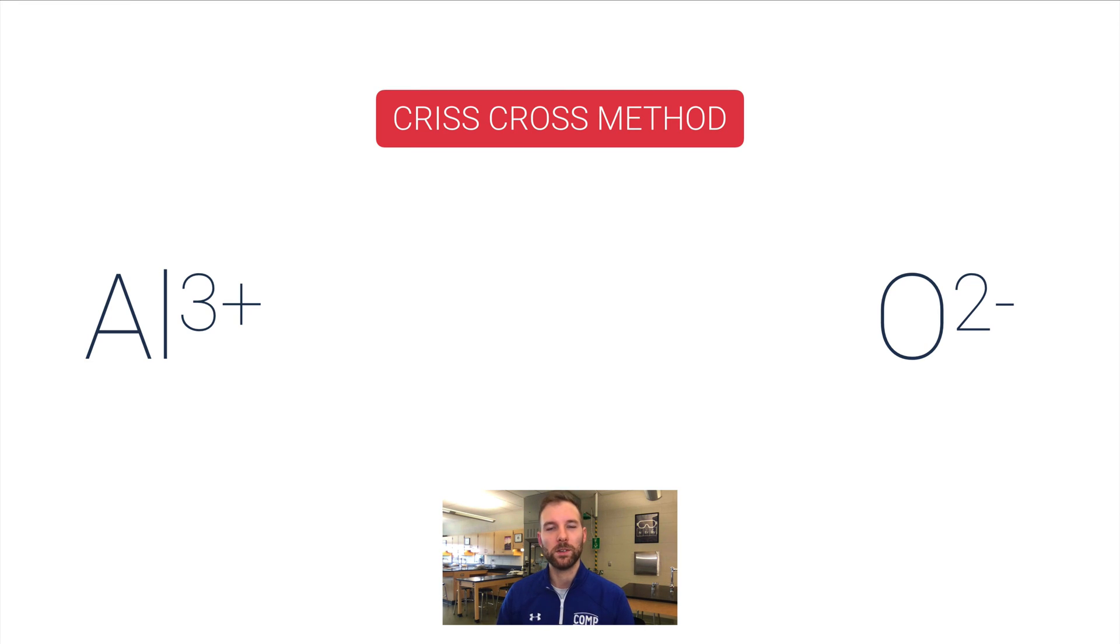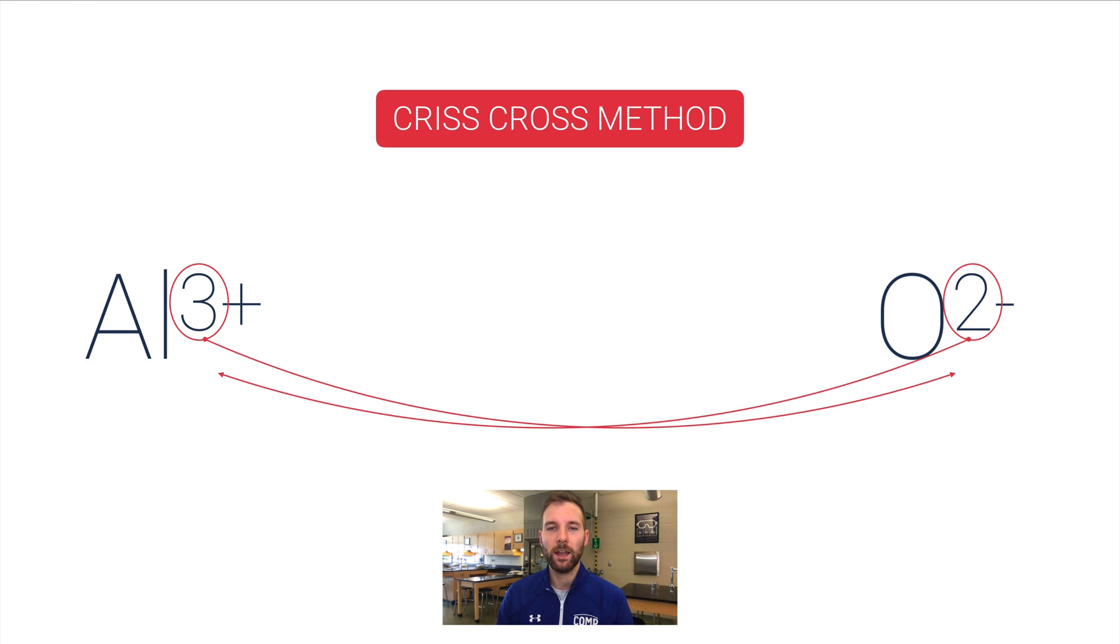Let me show you this crisscross method. There's a quick way to do this if you know the charges. You take the number of the charge, like for aluminum with the three, bring that three down as the subscript of the other element. Same thing here, bring that two down as a subscript of the first element and you end up with the correct formula. This will always work. The only issue is that if your resulting subscripts can be reduced, then you want to do that. In this case I can't divide two and three by something to give me whole numbers, so Al2O3 is the correct formula.